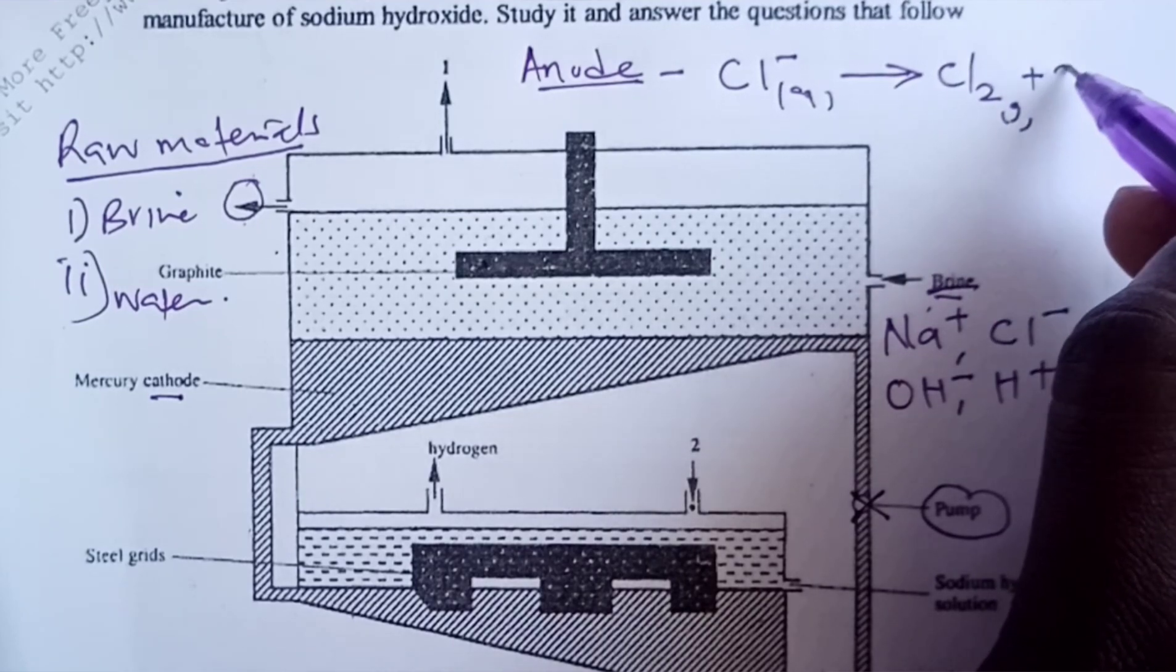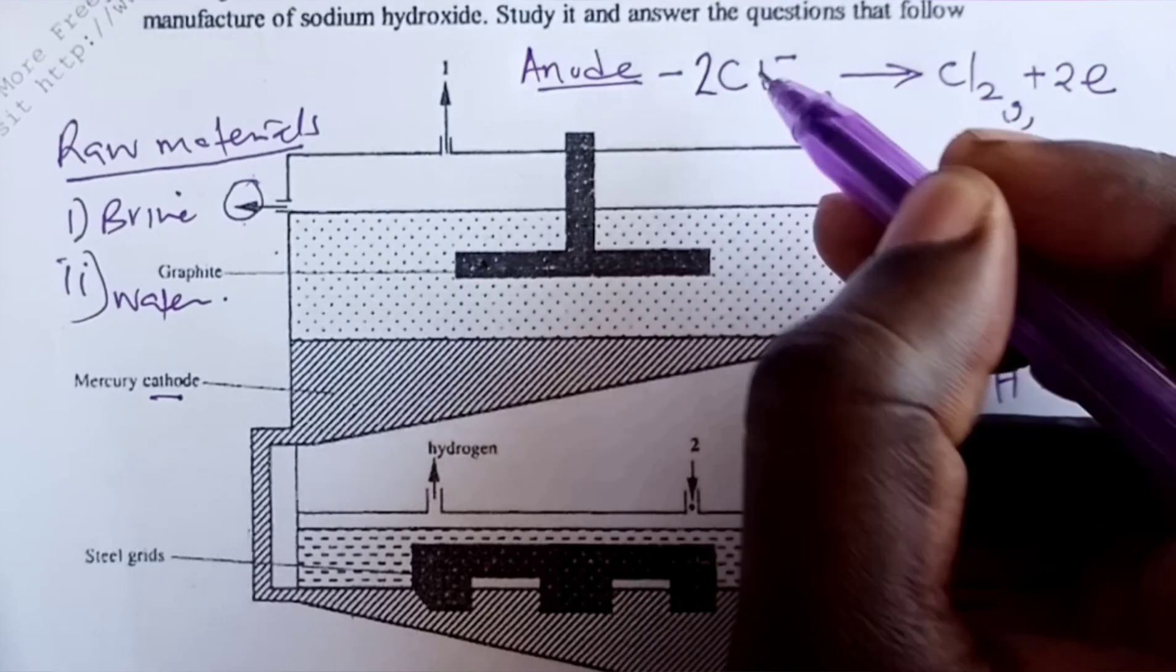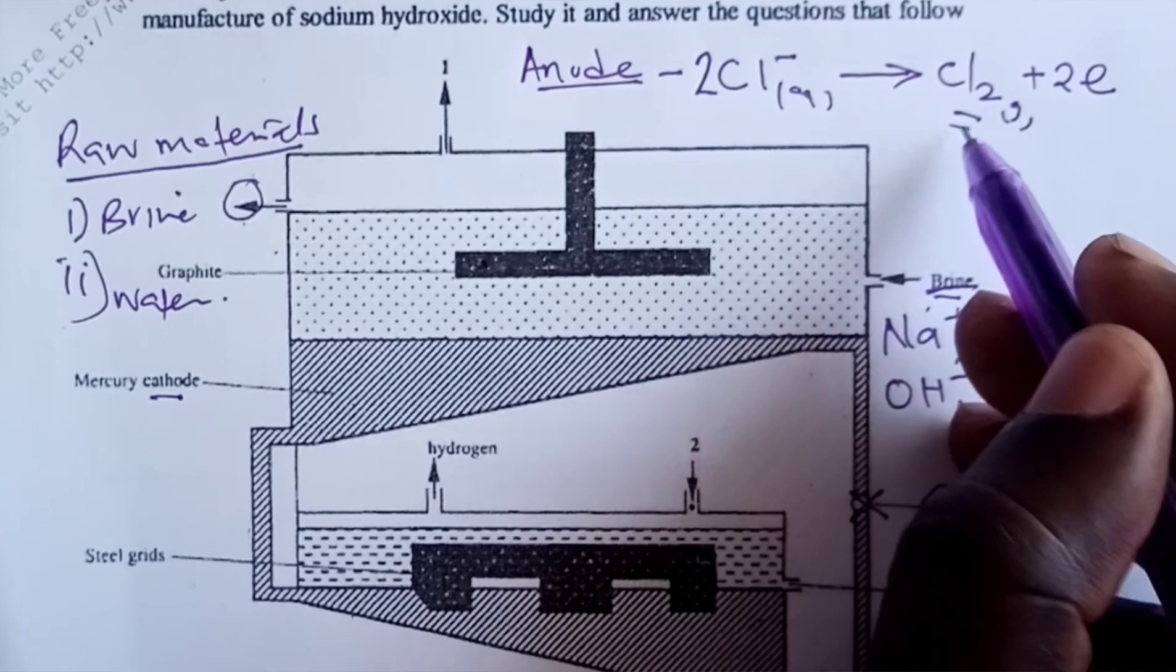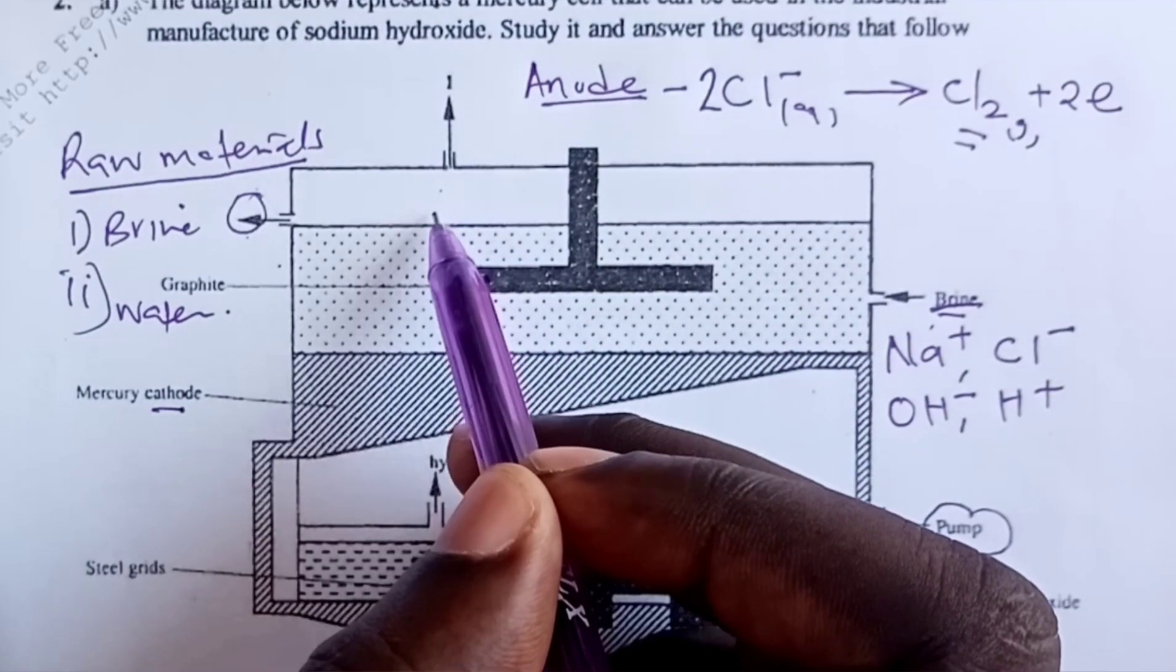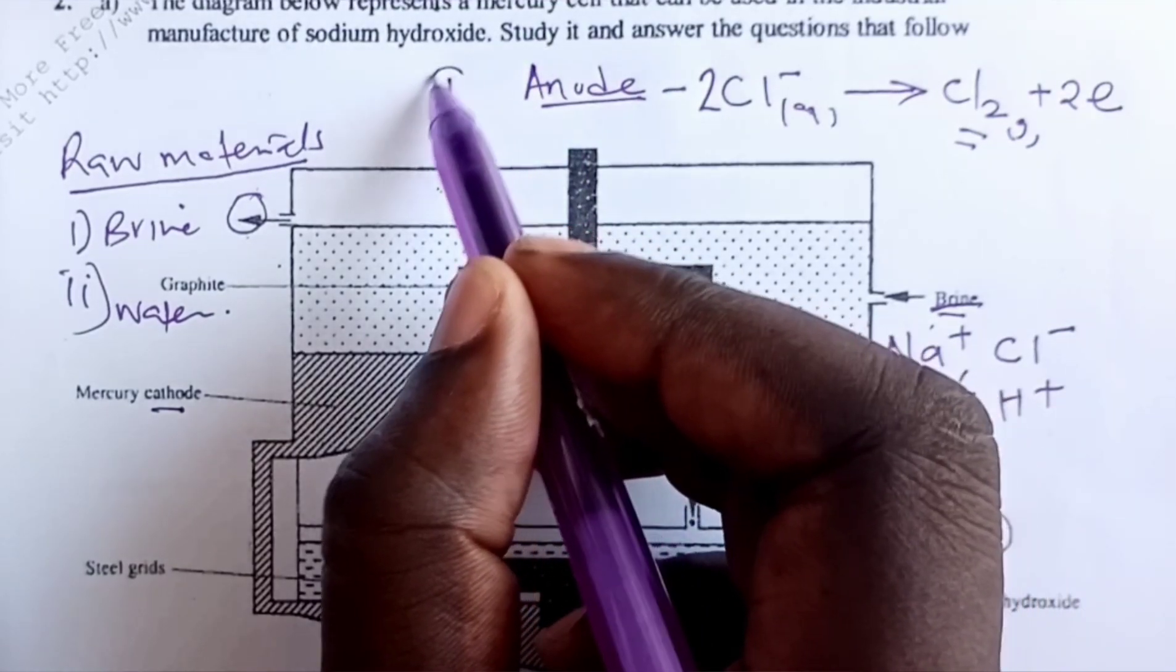When we do so, we are able to get chlorine gas accompanied by two moles of electrons, and then we balance with a two on the chloride ions. Once chlorine gas has been liberated, it is removed from the cell through our opening number one.